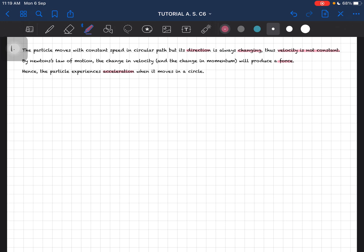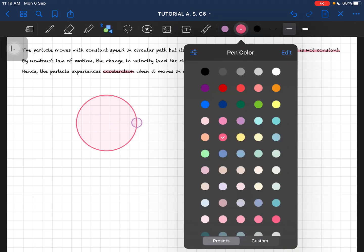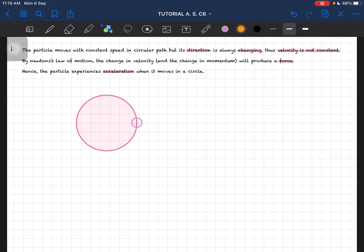This force causes the particle to experience an acceleration when it moves in a circle. Let's draw the diagram. If we have a circular path like this, and this is our object, the object will move in a circular path. The velocity is linear, so it does not move towards the center. It is tangential to the circular path. This is our velocity.